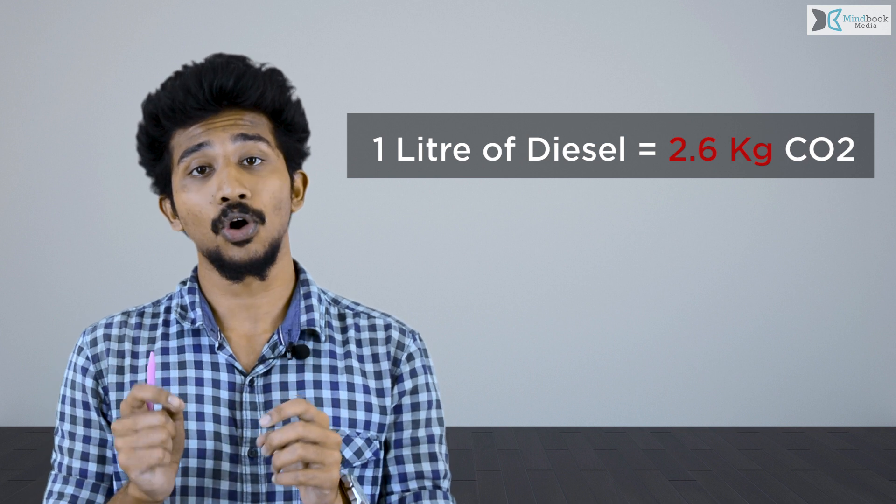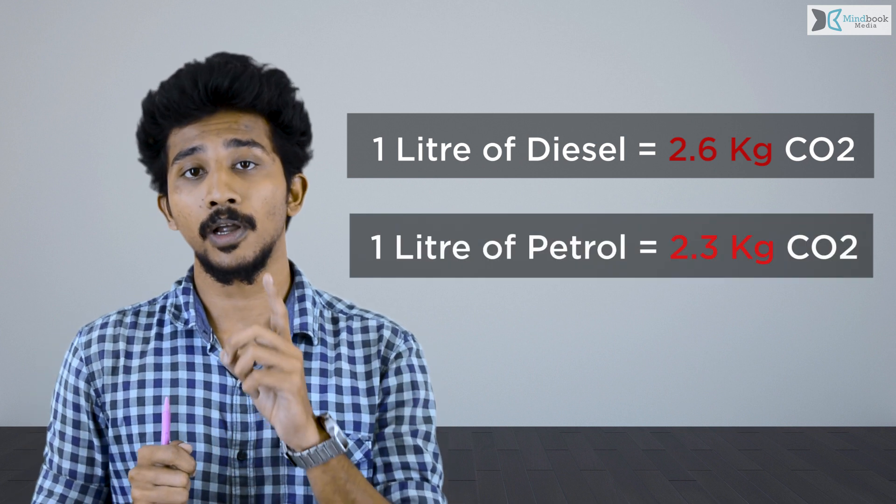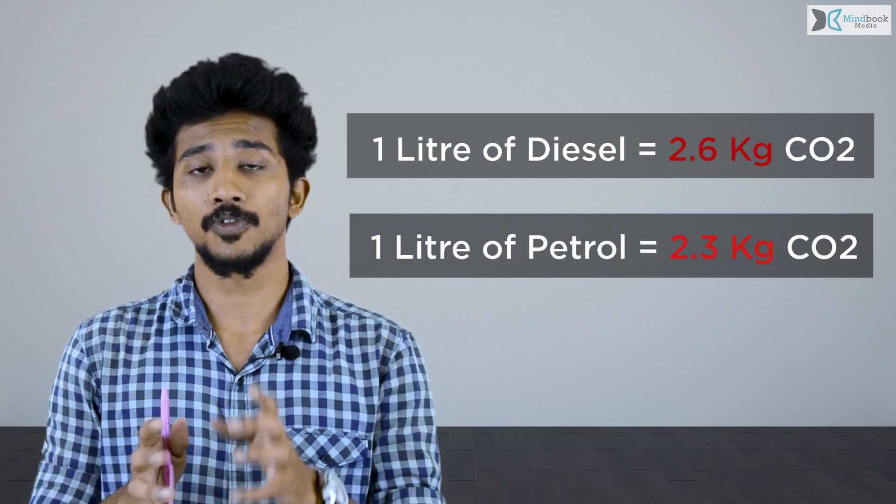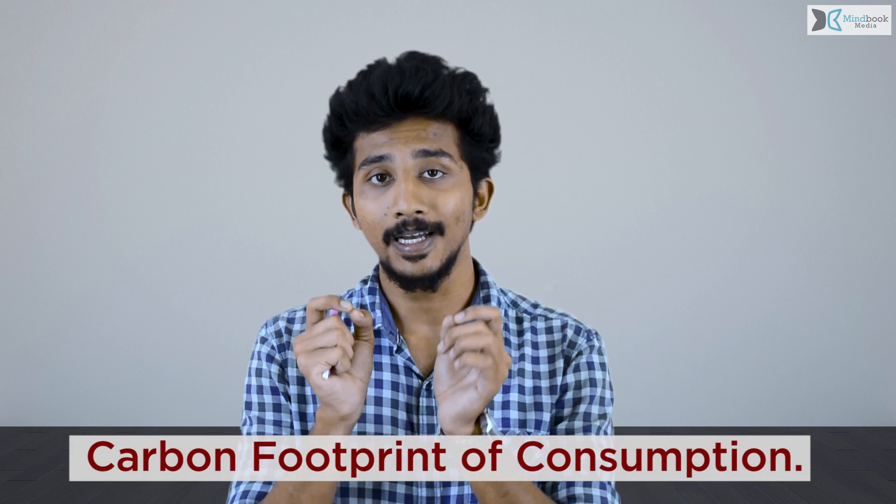To see the bigger picture, consider Bangalore: a total of 80 lakh vehicles have been registered there, of which around 52 lakh are two-wheelers and around 14 lakh are cars. On average, 1,754 vehicles are registered every single day. One liter of diesel can emit 2.6 kg of CO2 into the atmosphere, and one liter of petrol can emit 2.3 kg of CO2. You can do the math. This is the carbon footprint of consumption.